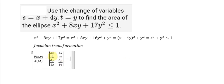Now we take the partial derivative of S with respect to S. Since s plus 4y contains s, the partial derivative of s plus 4y with respect to S becomes 1, because 4y becomes a constant number.